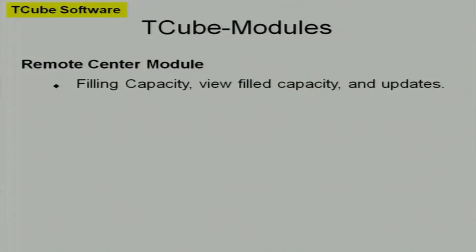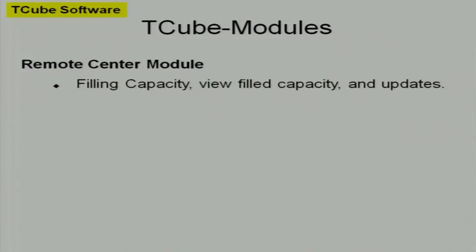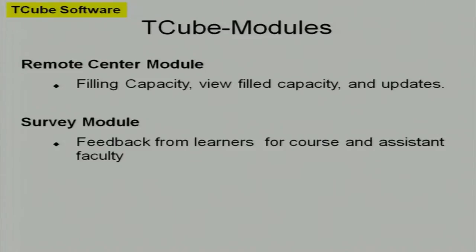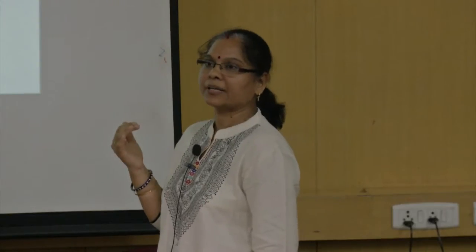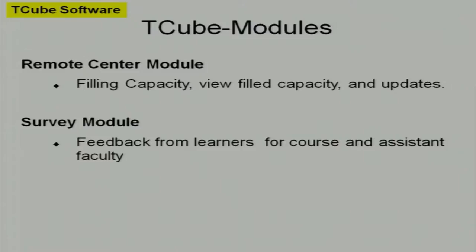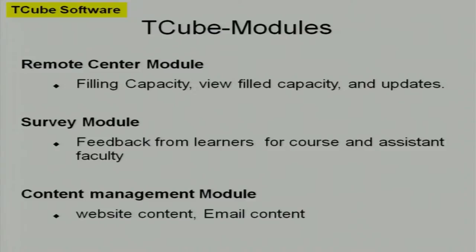The remote center module is where remote centers will show if they are interested in participating - they will fill in capacity like how many participants they can accommodate. They can view field capacity and updates can be done for different roles. A survey module will be developed where feedback from learners about the course and assistant faculty will be taken - if content needs to change, that feedback will be there. The assistant faculty's responses and participation in the discussion forum will also be evaluated. The feedback will be presented to faculty by the software. The content management module will handle website content related to FDP and email content during the registration process.